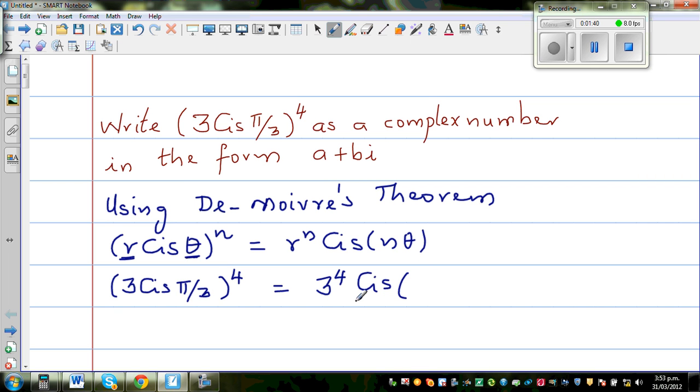Cis, multiplying the angle by 4, will become 4π/3. That's it.